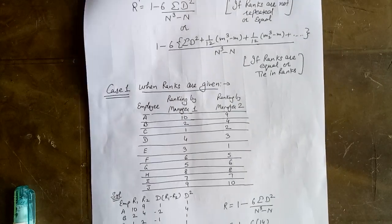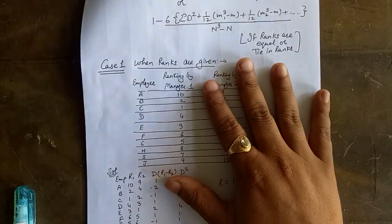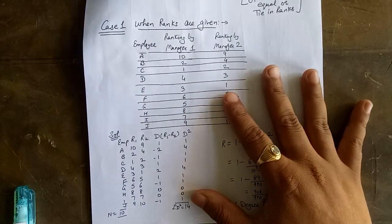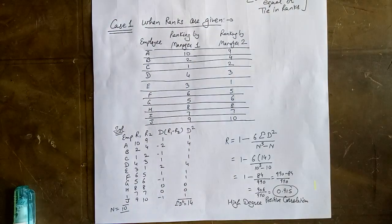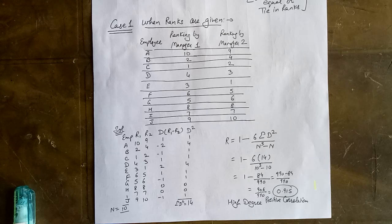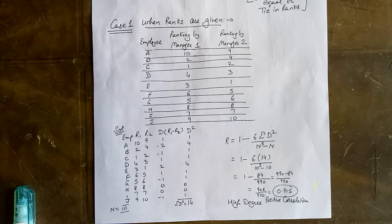Let us discuss Case 1, where ranks are already given. Here ranks are given by two managers for employees A to J. Manager 1 has ranked them as 10, 2, 1, 4, 3, 6, 5, and so on. Manager 2 has given rank 9 to A, rank 4 to B, rank 2 to C, and so on. We will denote Manager 1's ranks as R1 and Manager 2's ranks as R2.